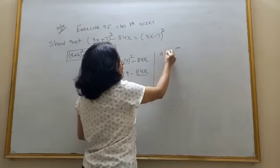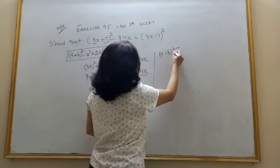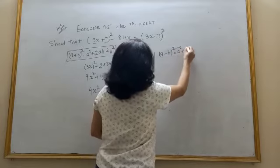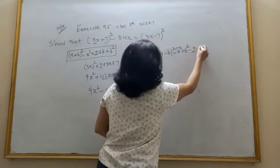I will use A minus B whole square, and that will be A² plus B² minus 2AB.